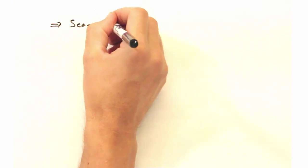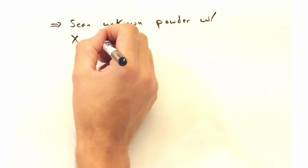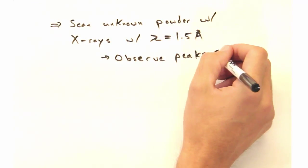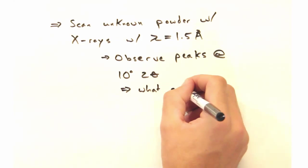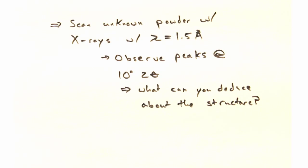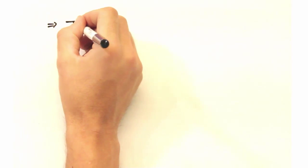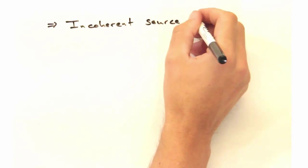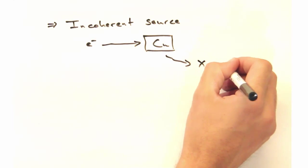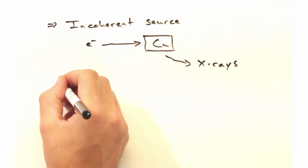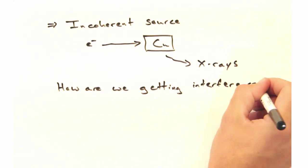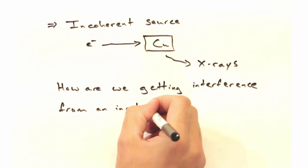Let's consider scanning an unknown powder with x-rays of wavelength 1.5 angstroms. What can you deduce about the material if you saw peaks down at 10 degrees 2-theta? And here's a last question: when we use an x-ray source, it's an incoherent source — which is to say that the individual photons are not in phase with each other. We're literally slamming electrons into a chunk of copper and having photons fly off. So how are we getting interference from an incoherent source?